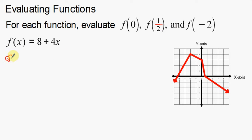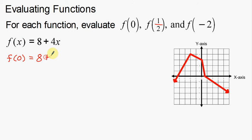So I want to take the function and plug in zero. I'm going to evaluate f of zero. Basically what that means is I'm going to take zero and, instead of plugging in an x, I'm going to plug in a zero. So in this equation, instead of an x, I'm going to plug in a zero. So this is going to be eight plus four times zero — replacing the x with a zero.